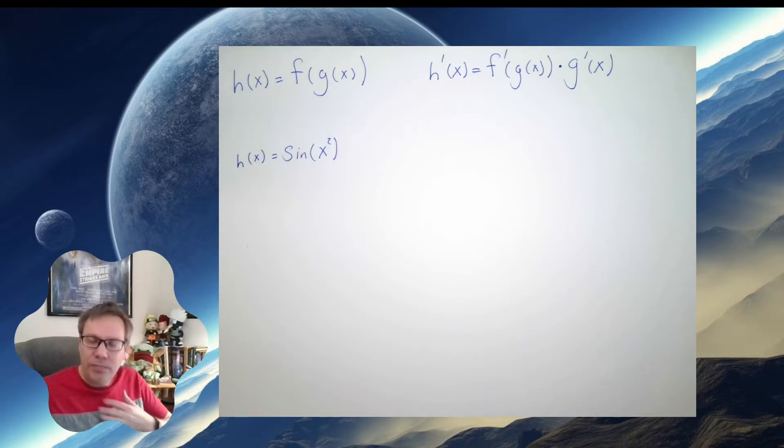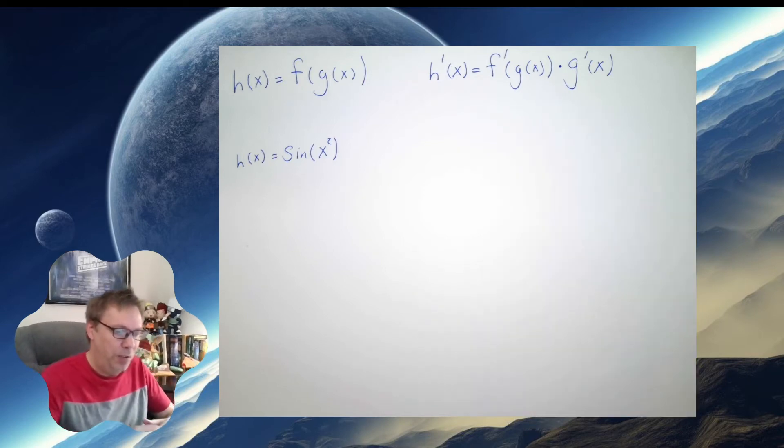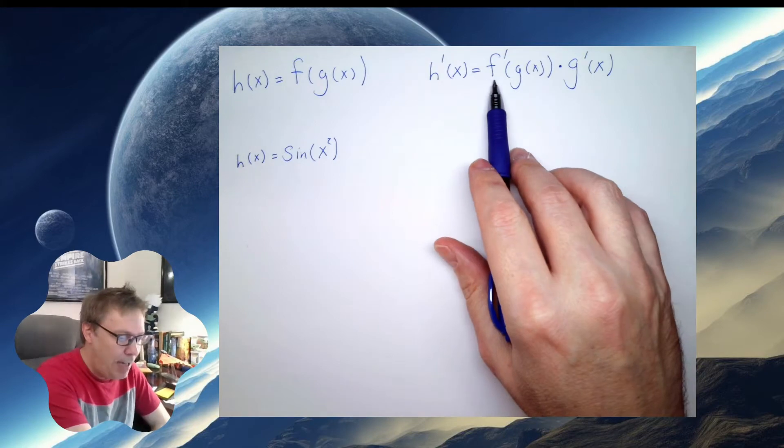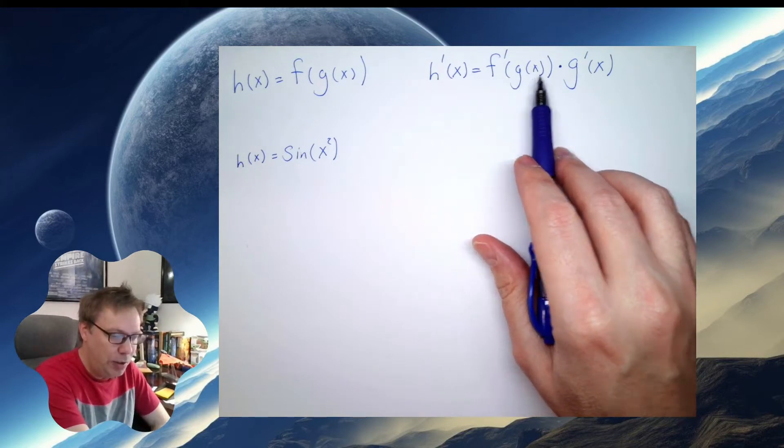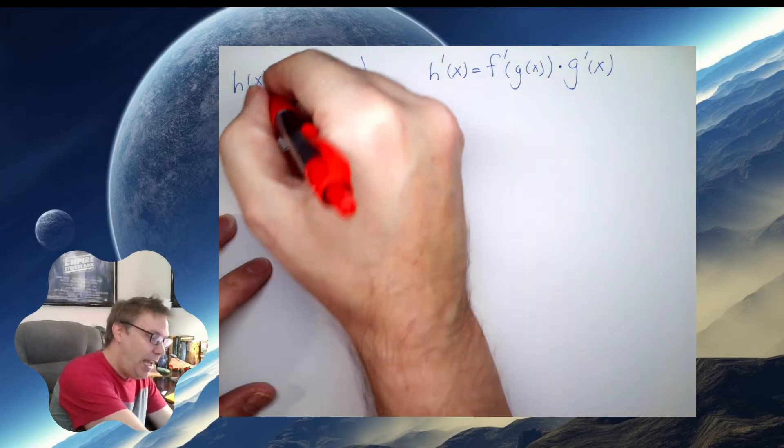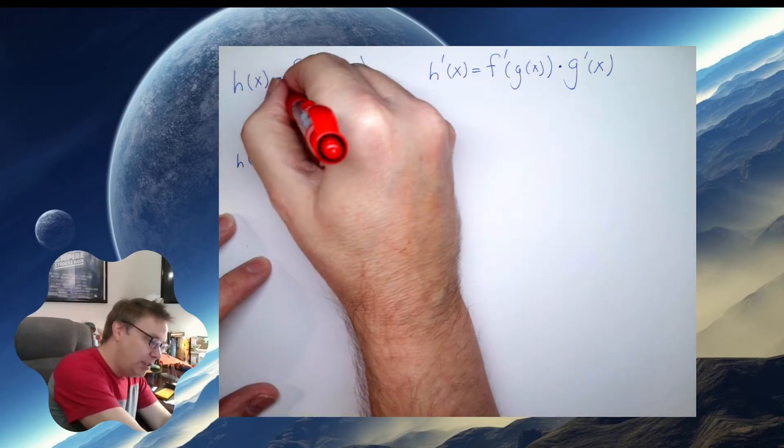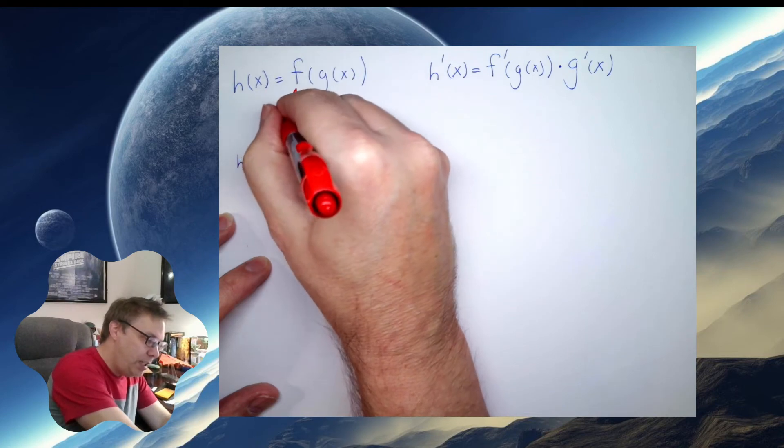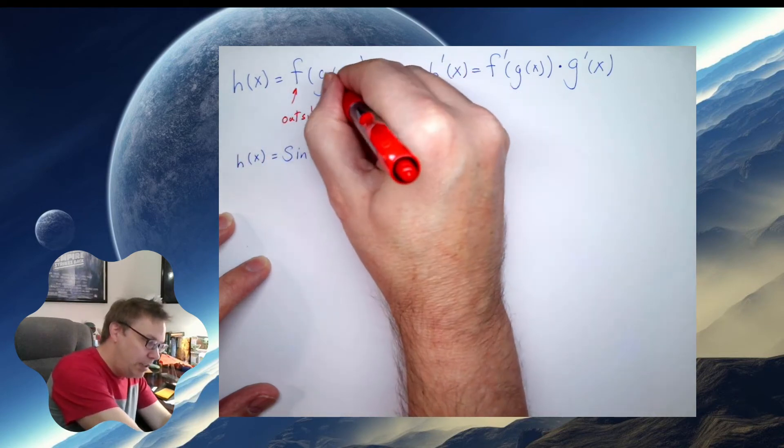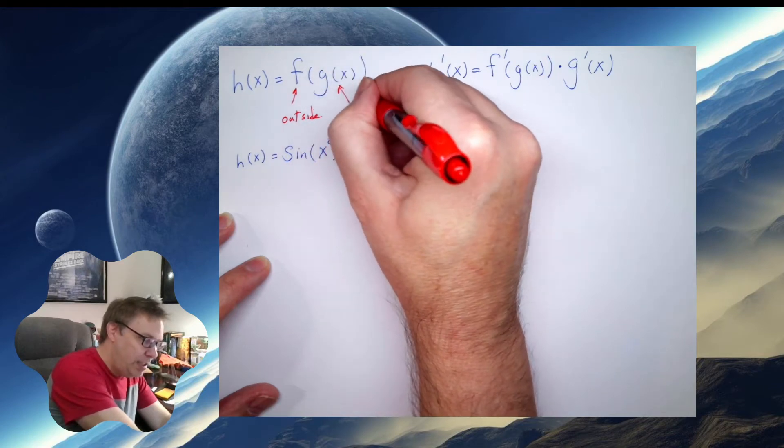To take the derivative, we have a formula over here. And I'm going to say this the following way: the derivative of the outside leave the inside alone times the derivative of the inside. So I want to treat f of x as the outside. And g of x, I want to treat this as the inside.